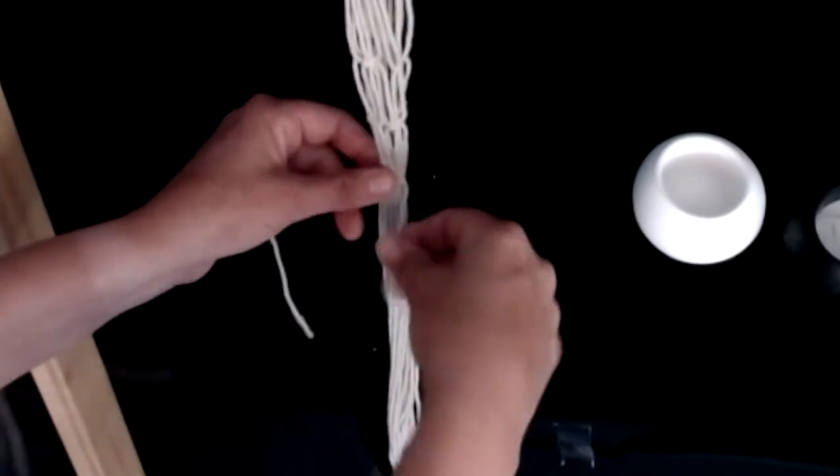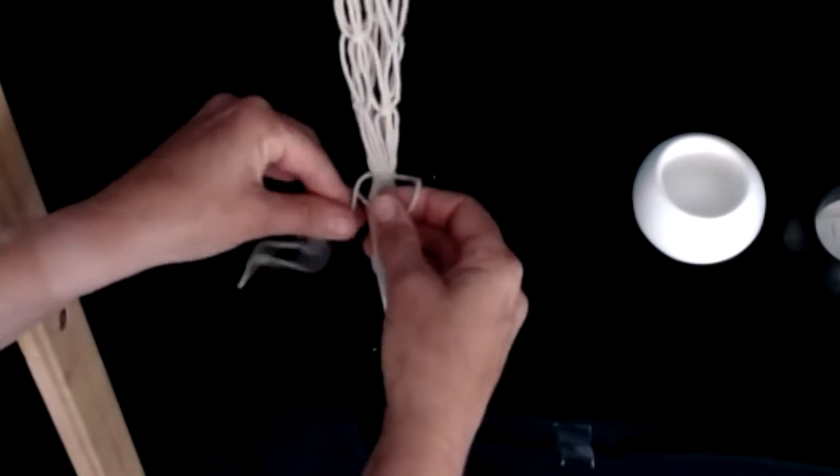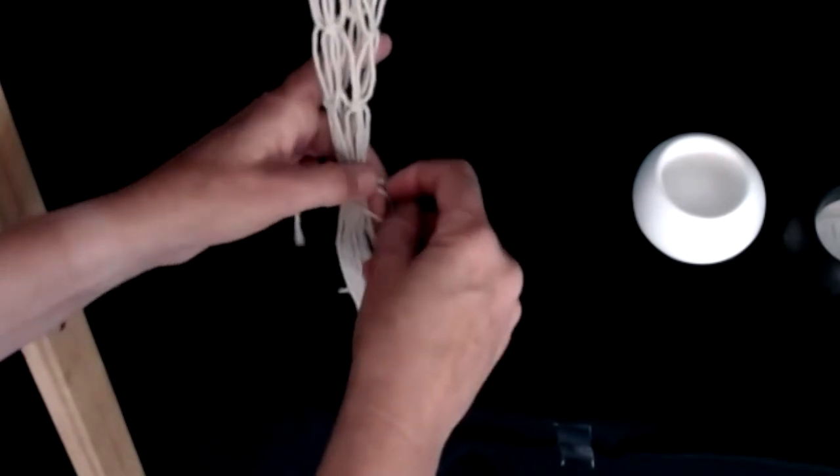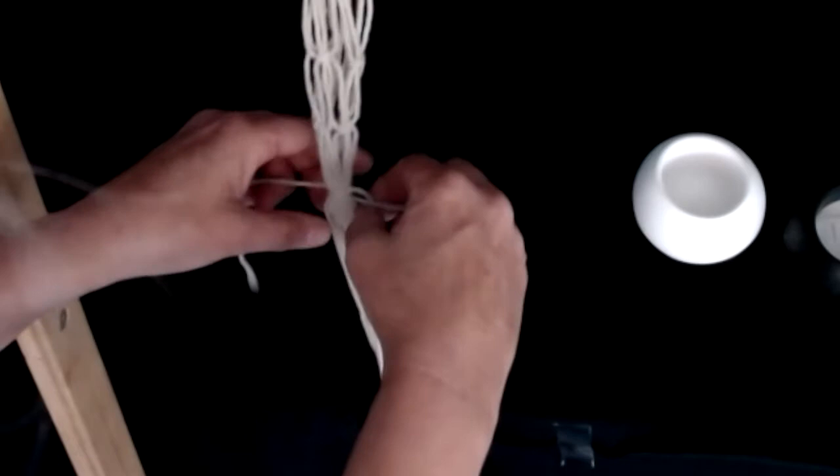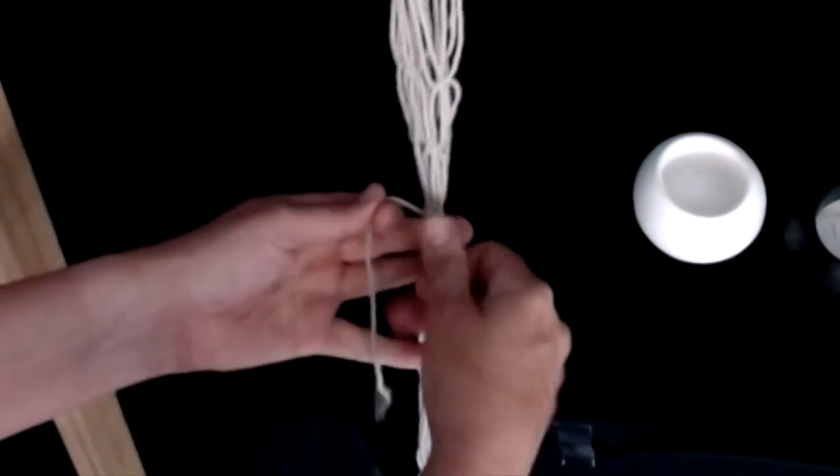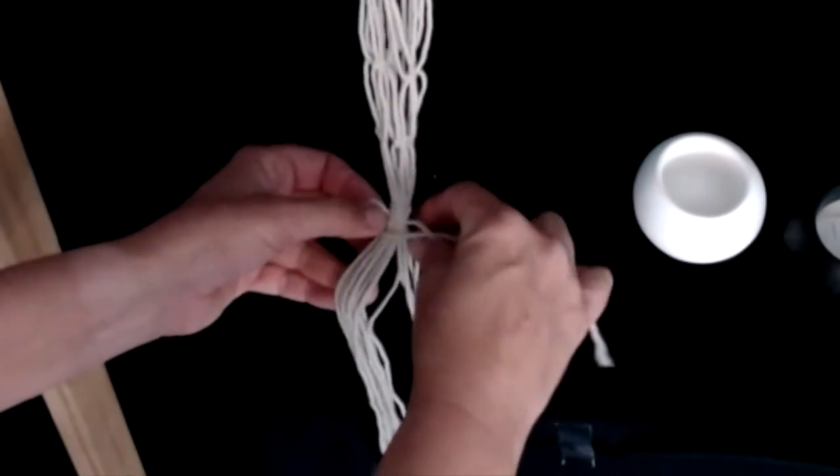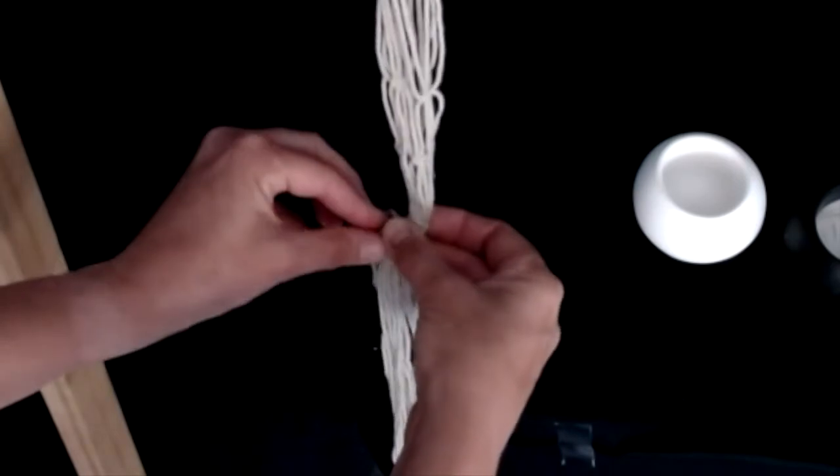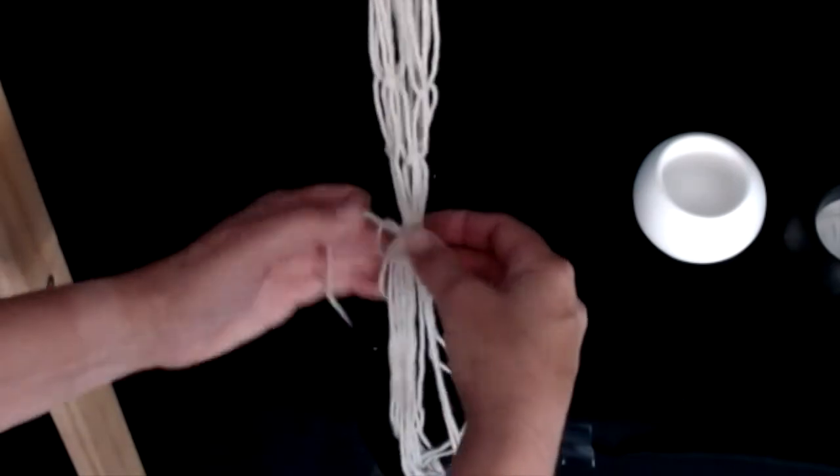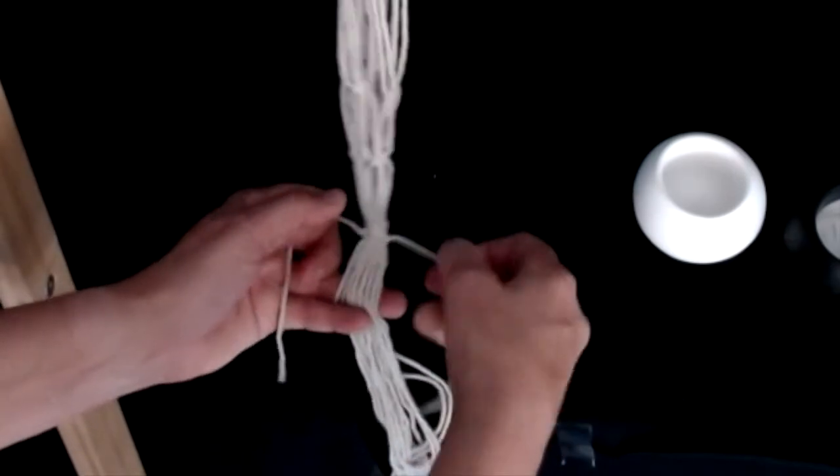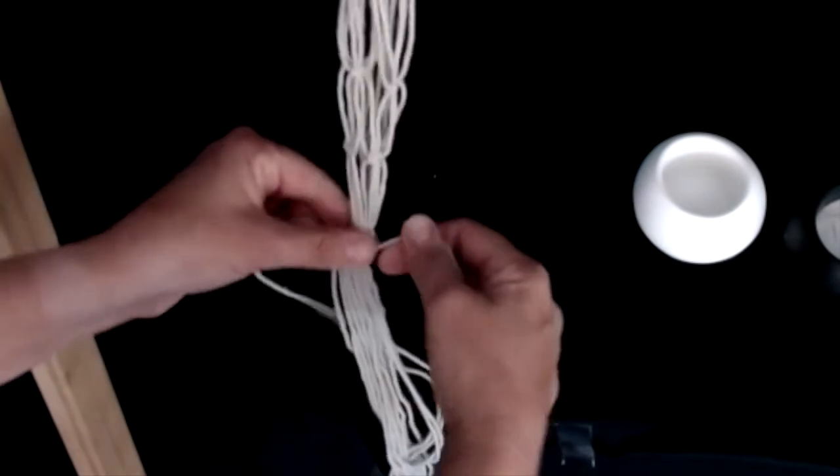I am going to repeat this process as a square knot to gather the base of my basket. You can choose how long you want this gathering to be. But I am going to do five square knots.